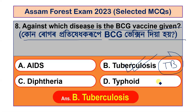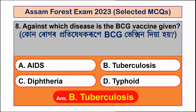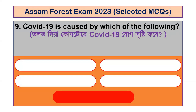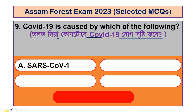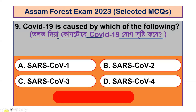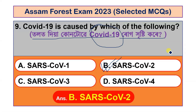Question number 9: COVID-19 is caused by which of the following? Options are SARS-CoV-1, SARS-CoV-2, SARS-CoV-3 and SARS-CoV-4. The correct answer is option B, SARS-CoV-2.